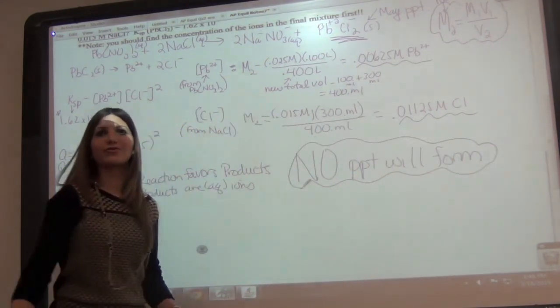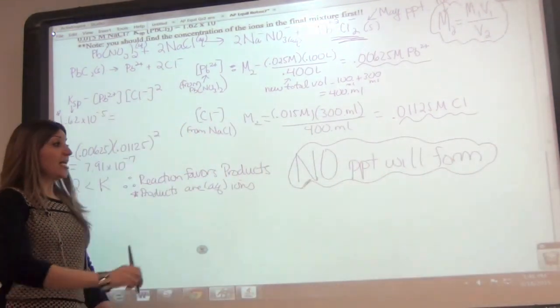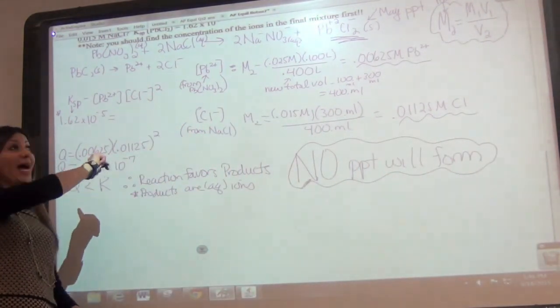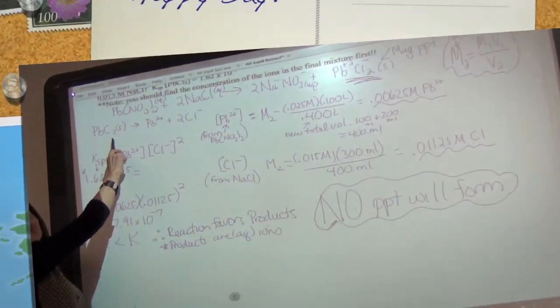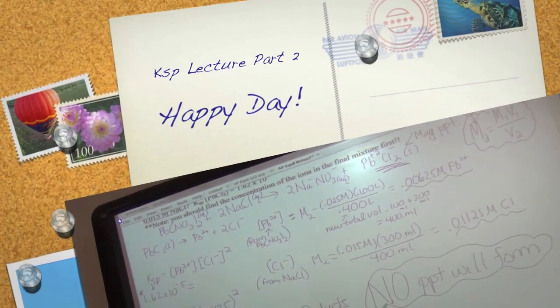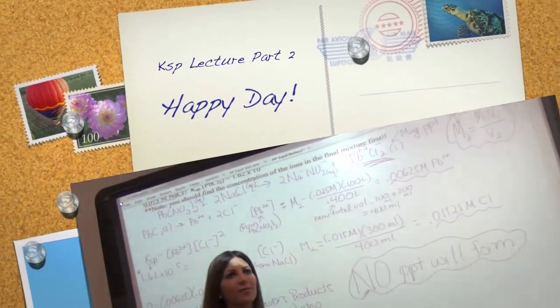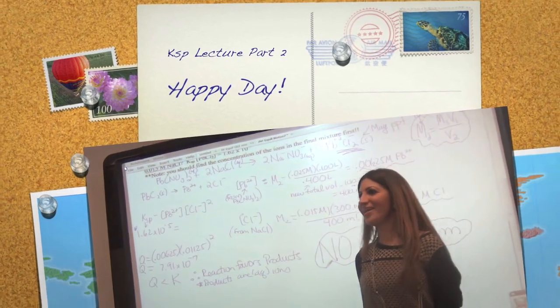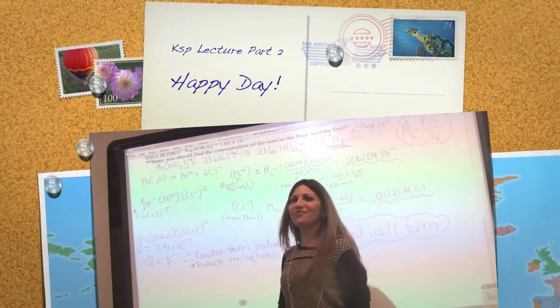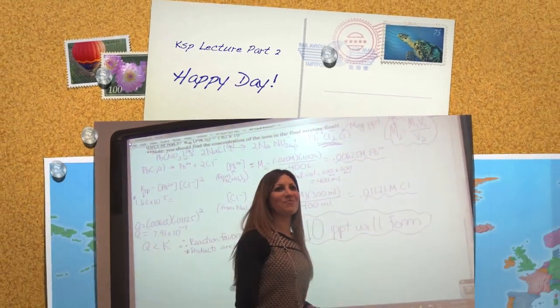Your answer is no precipitate. If you were favoring the reactants, your reactant is a solid, then you would be forming a precipitate. But since Q is less than K and products are favored — and those products are aqueous ions — no precipitate forms. And that's it for Ksp.